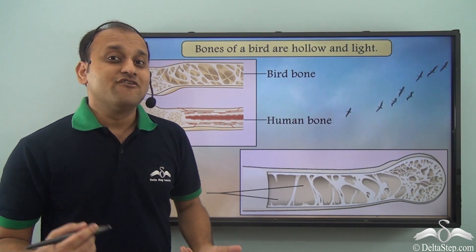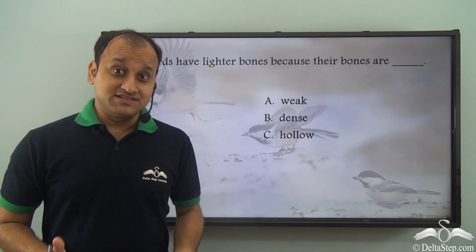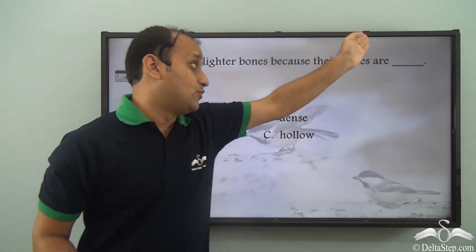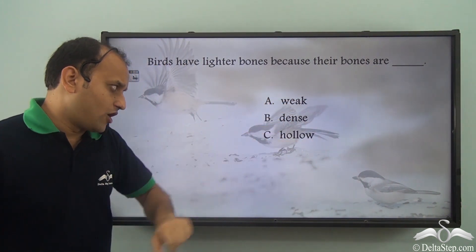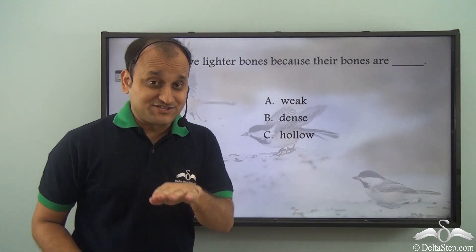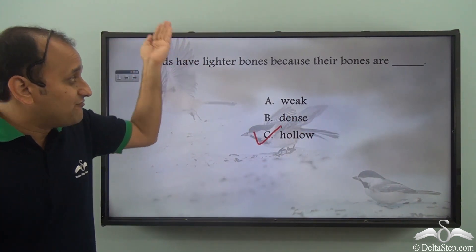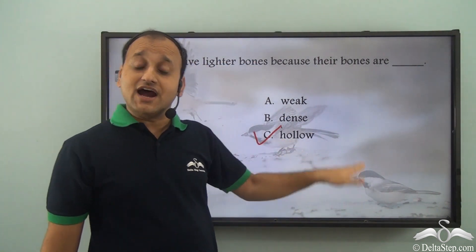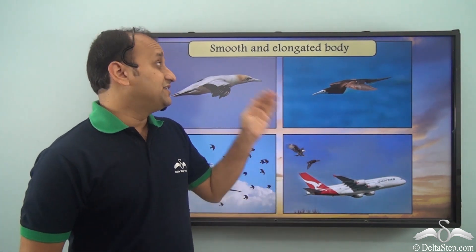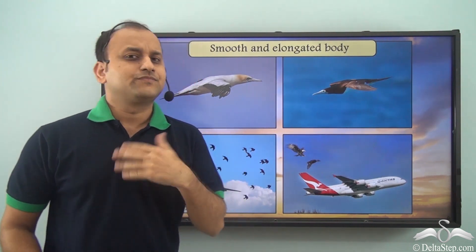Bones of birds are hollow and light, and that is a major advantage for birds because of which they can fly in the air. Now can you answer this question: birds have lighter bones because their bones are weak, dense, or hollow? Well, the answer is hollow. They have lighter bones because their bones are hollow.